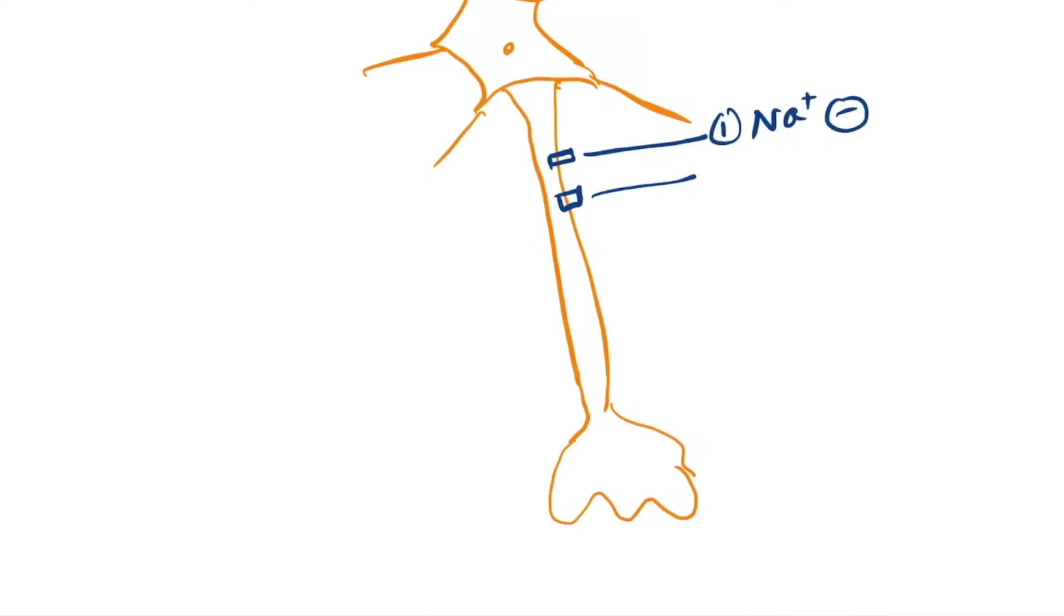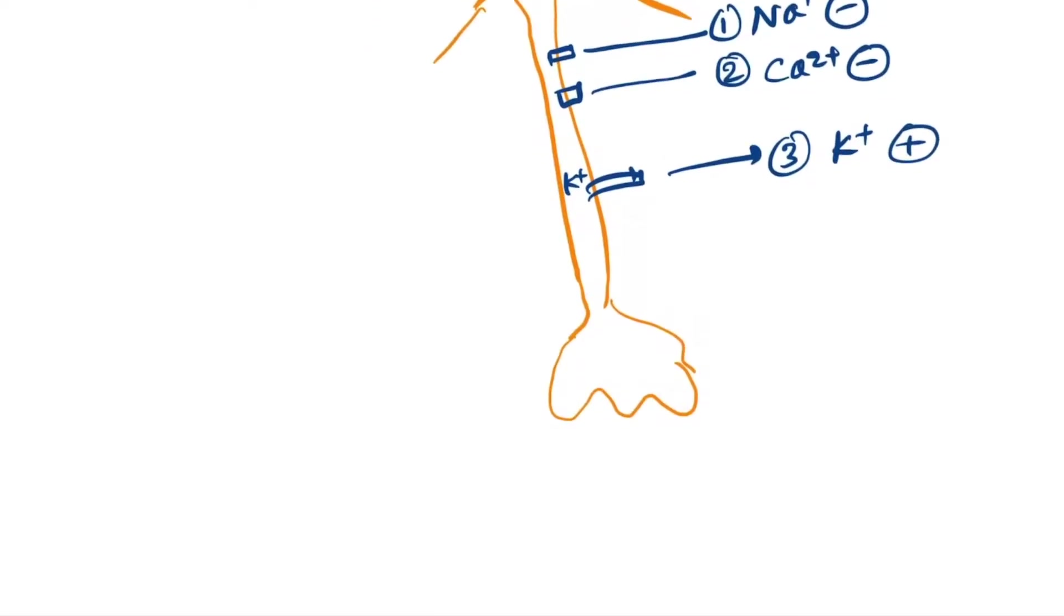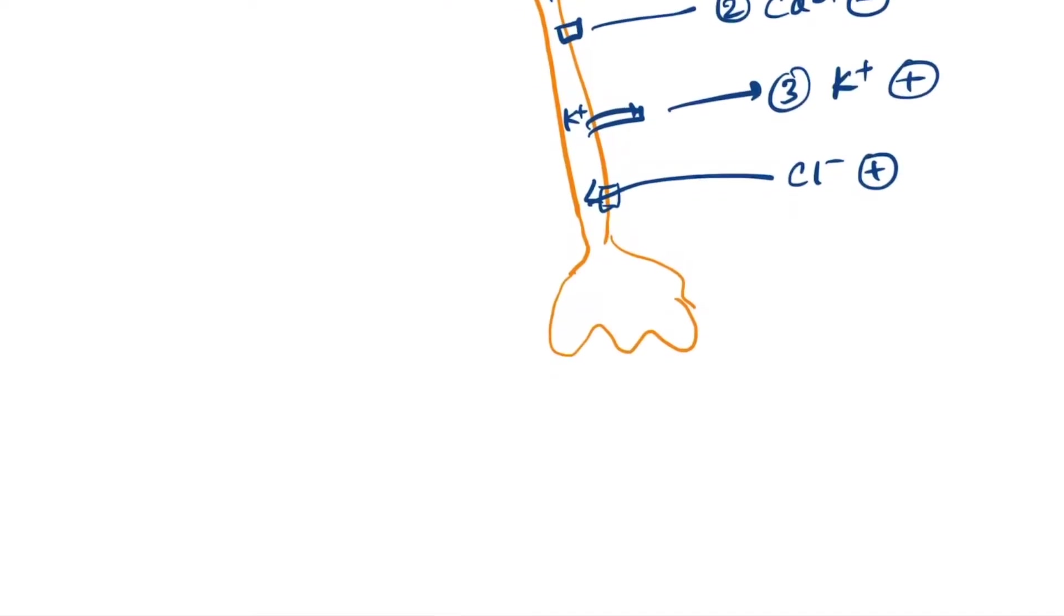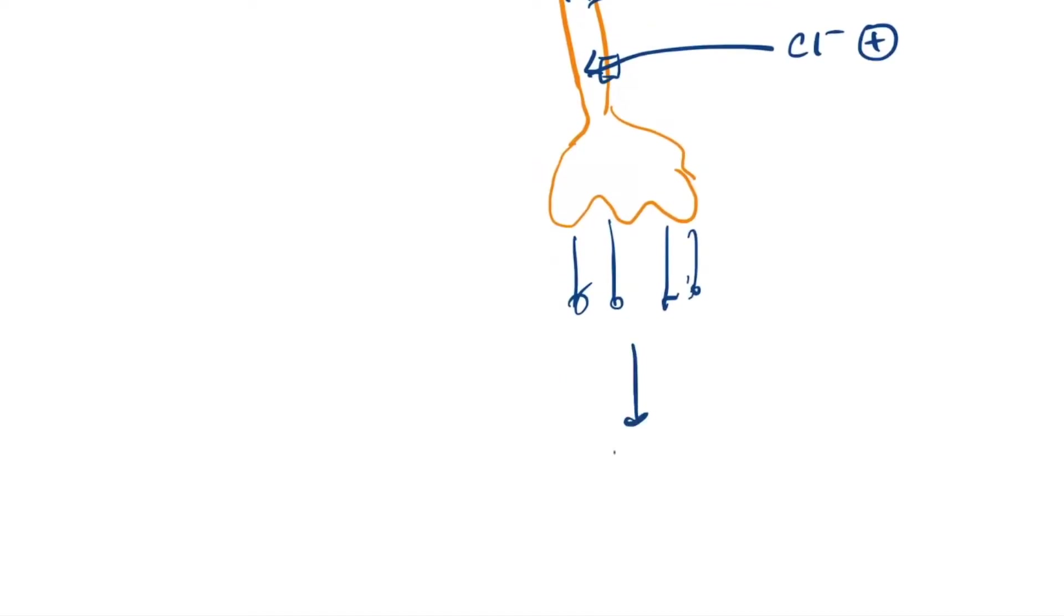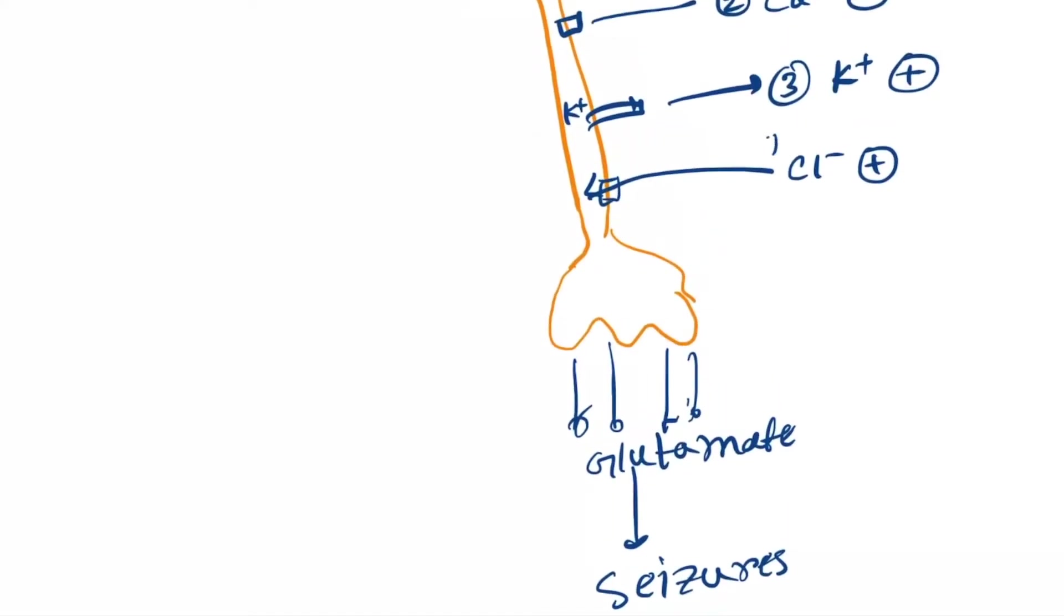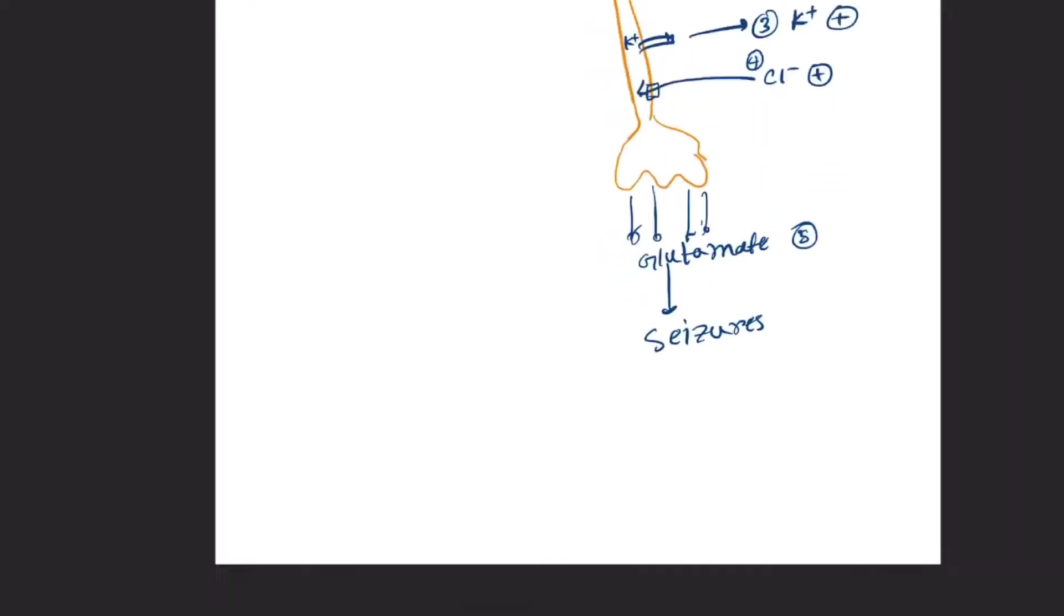So first this is the sodium channel and this is the calcium channel, so we can prevent - number one drug is sodium channel inhibitor. Next one is calcium channel inhibitor. Next we can open the potassium channel, so potassium channel opener. Next is the chloride channel opener. And then is here release of glutamate. Glutamate causes the seizures, so glutamate release inhibitors or glutamate antagonists. So three, four, and here it is the five. Let's list the name of the drugs.